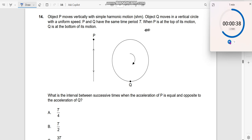P and Q have the same time period T. When P is at the top of its motion, Q is at the bottom of its motion. When P is here, Q is at this point, which means when Q goes upwards, P comes downwards, right?